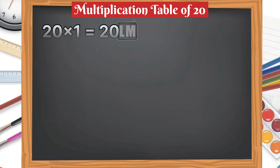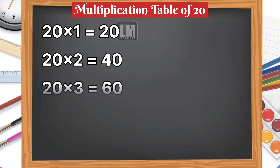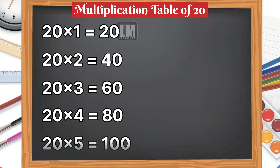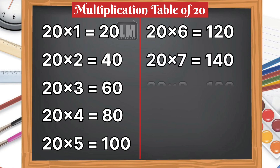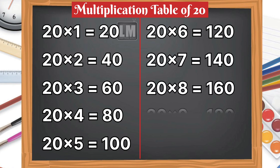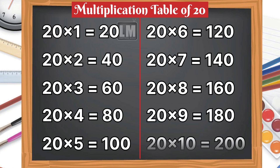Let's learn table of 20. 20 1s are 20, 20 2s are 40, 20 3s are 60, 20 4s are 80, 20 5s are 100, 20 6s are 120, 20 7s are 140, 20 8s are 160, 20 9s are 180, 20 10s are 200.